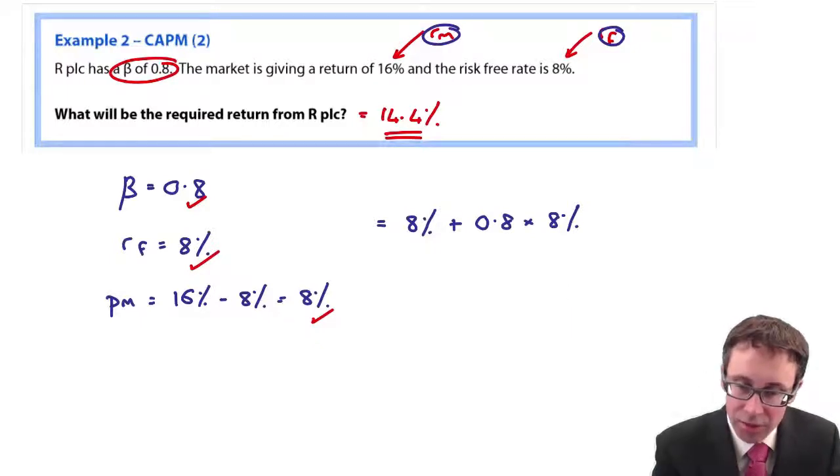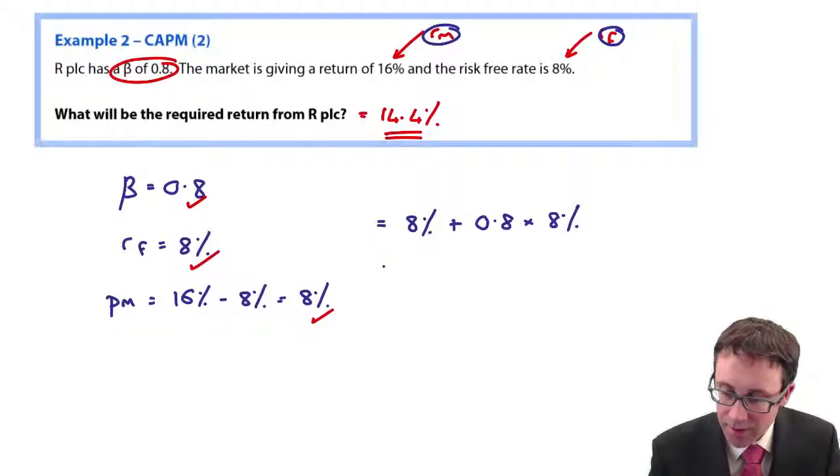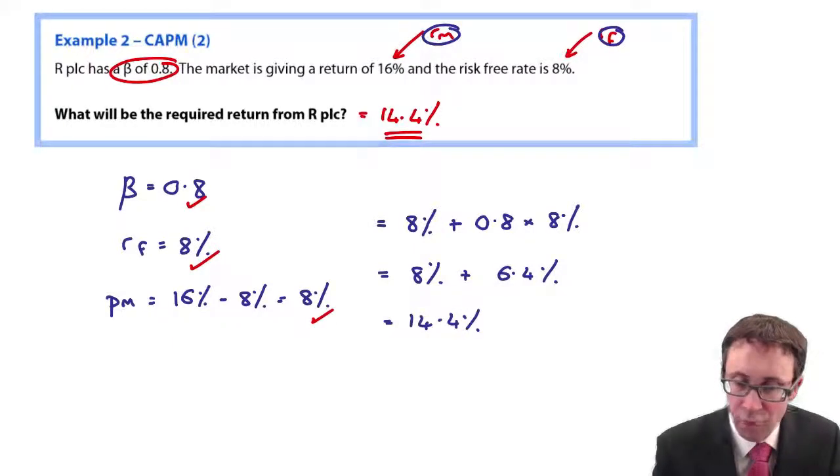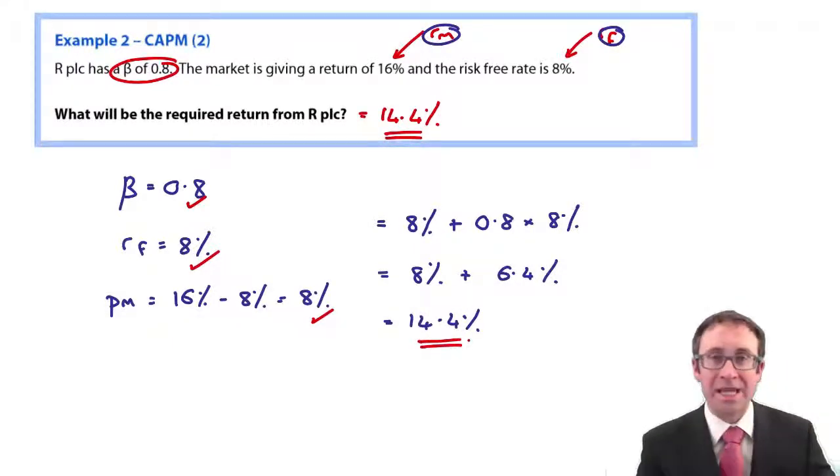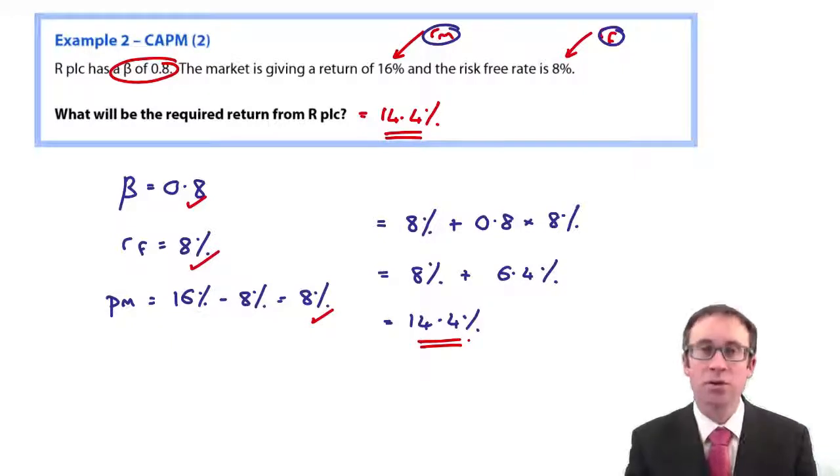So, again, if that's the case, just be careful. You've got 8 percent plus 0.8 multiplied by 8 percent. And when you do that, that should go through there and give you 8 percent plus 6.4 percent, which is the same, 14.4 percent. So, do just be very, very careful there.